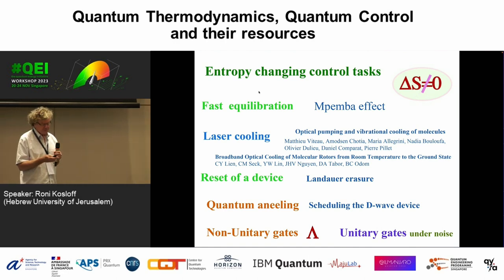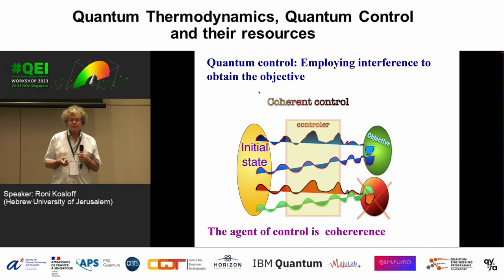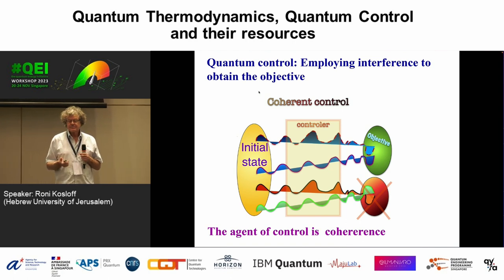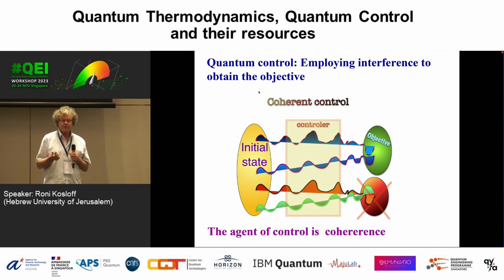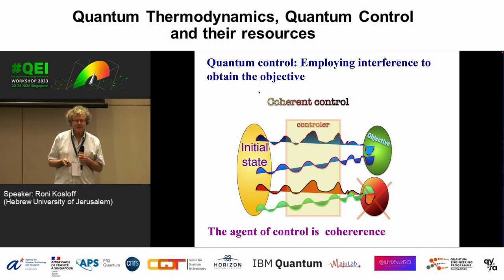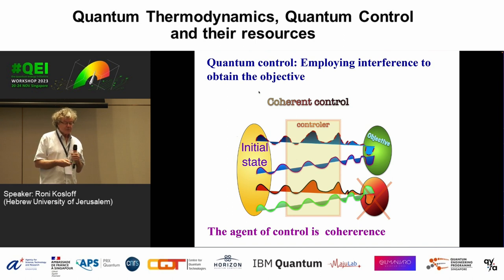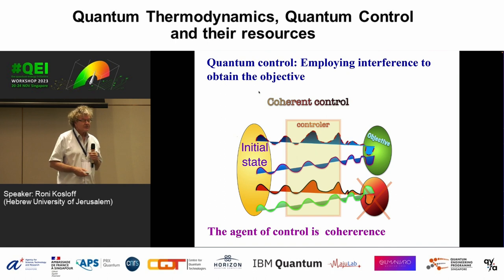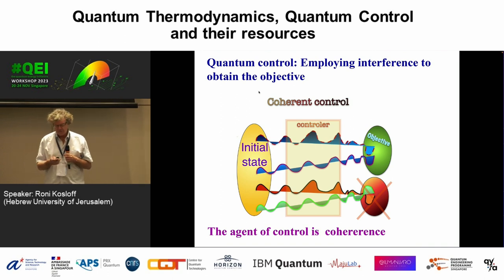Quantum control, or coherent control, works by interference — that's why our intuition is usually not so good, since we're classical objects and interference isn't in our intuition. If you want to know how to do quantum control: create constructive interference where you want it — on your objective — and destructive interference where you don't want to go. This is the general principle of quantum control.